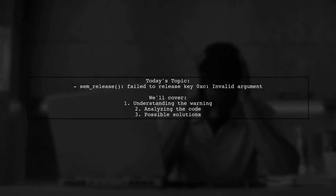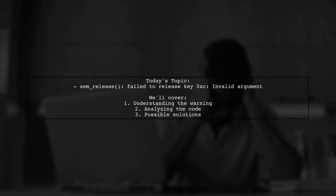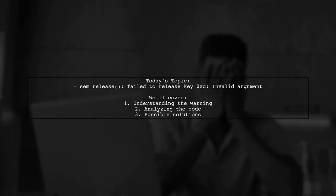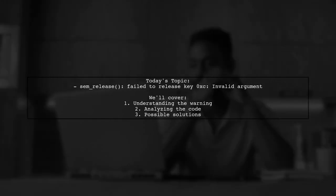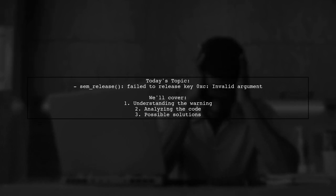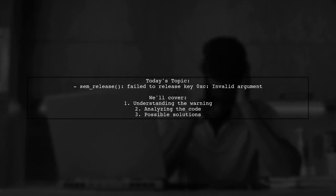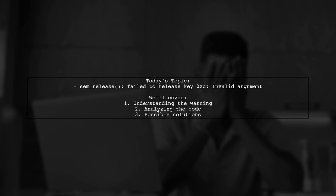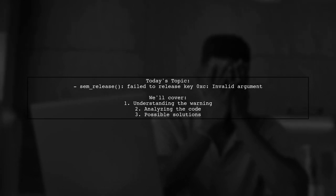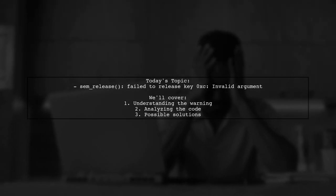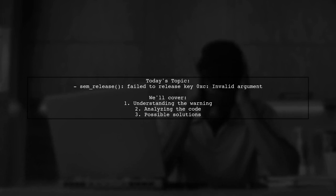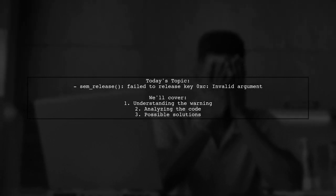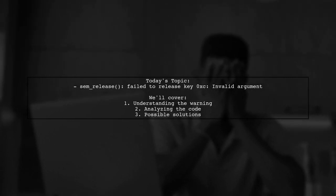Welcome to our tech troubleshooting session. Today we're addressing a perplexing issue that many developers encounter while working with semaphores in PHP. Our viewer is facing a warning that reads: semrelease failed to release key 0xc, invalid argument. Let's dive into the details and see how we can unravel this mystery together.